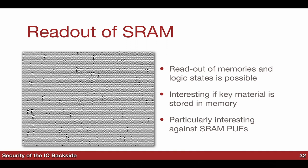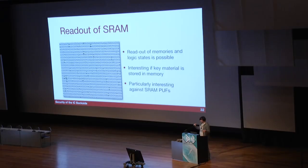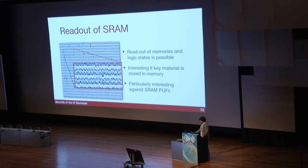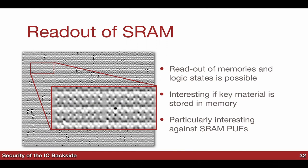Wir haben die Versorgungsspannung von 1.8 Volt auf 0.6 Volt runtergesetzt. Bei 0.6 Volt bleibt die Daten im Speicher, aber man kann keine Befehle mehr ausführen — das ist so wie ein Zombie-Status. Jetzt scannen wir mit dem Laser, während der Chip nicht mehr arbeitet. Wir messen den Strom und bekommen so ein Bild. Man lässt das Gerät abstürzen, damit es stecken bleibt, und danach scannt man den Speicher ab.